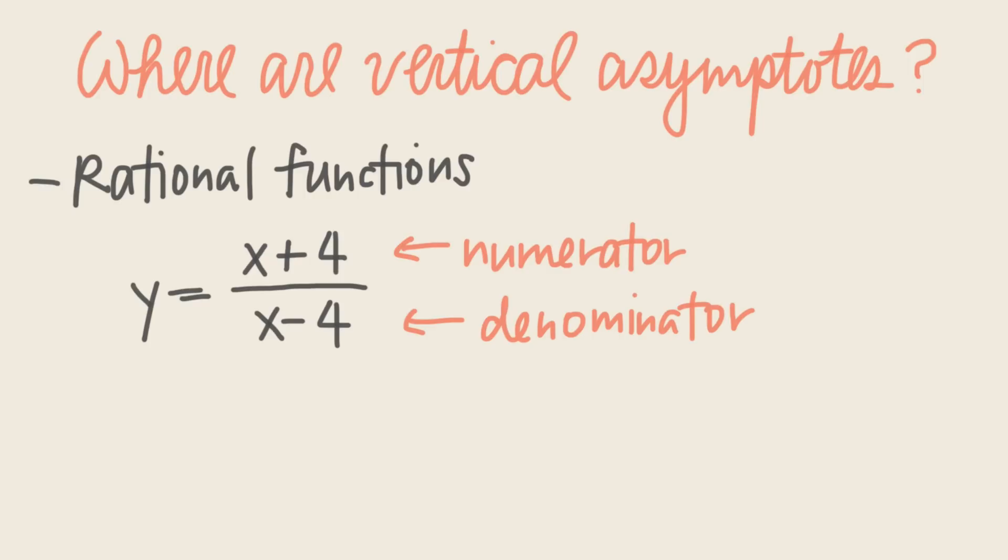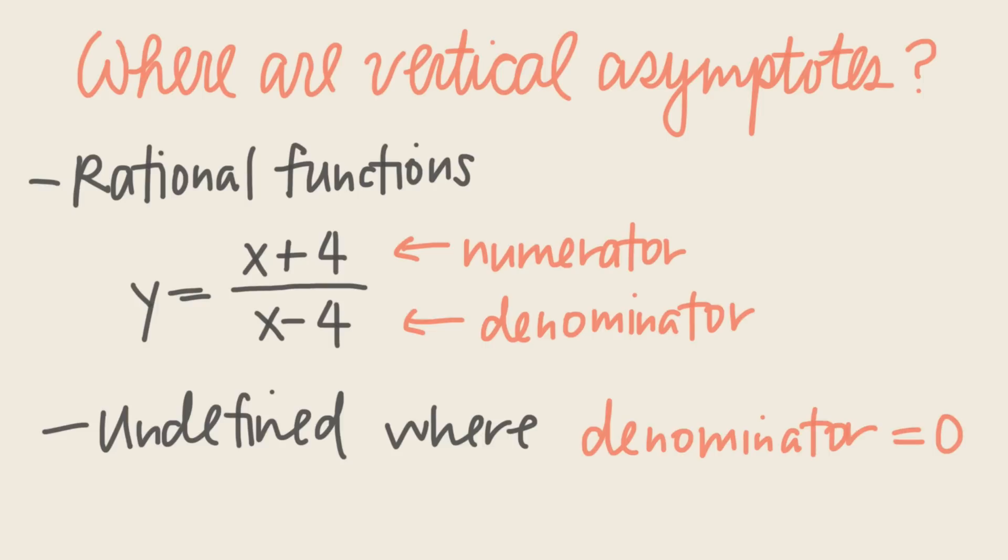Most often, we run into vertical asymptotes when dealing with rational functions. Rational functions, remember, are the ones that look like this, with a numerator and denominator. These functions have vertical asymptotes whenever they are undefined, and they are undefined whenever their denominator is equal to 0, because, of course, dividing by 0 can't be done.